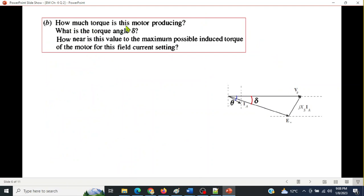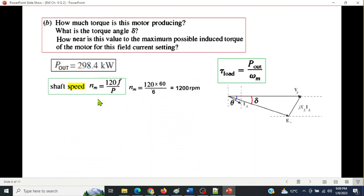So both the items we have found. Now we go to part B. How much torque is this motor producing? So this is the formula for the torque. We know Pout. We have to calculate Omega M, the angular rotational speed. Pout we already know. Omega M we can find from the shaft speed, which is given by this formula: frequency 60 given in the question and poles are 6 poles. So the RPM will be 1200 RPM. Now to convert into Omega M, we have to multiply this by 2 pi and divide by 60.